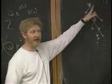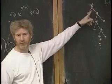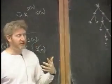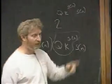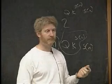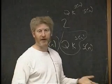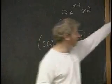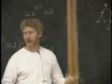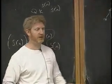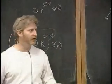Each configuration we store is going to take S(n) symbols. So, how many configurations can we conceivably store and still get away with this theorem? S(n). We've got S(n) for each configuration, and S(n) configurations we have room to store. That gives us S²(n) — S(n) times S(n).